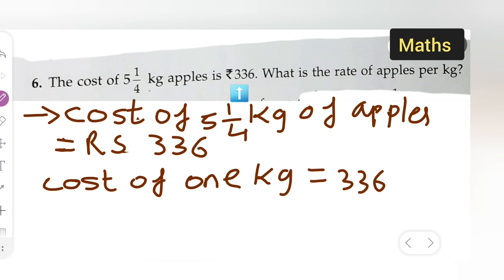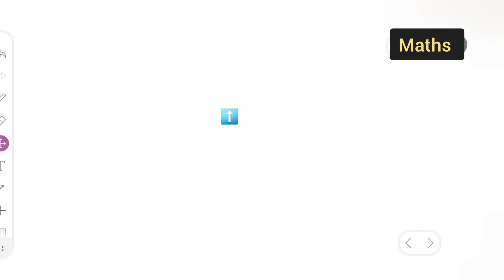336 and then divide it by 5 and 1 upon 4. Now this is going to give you 336 divide by, now this 5 and 1 upon 4 can you see, 5 and 1 upon 4 over here.